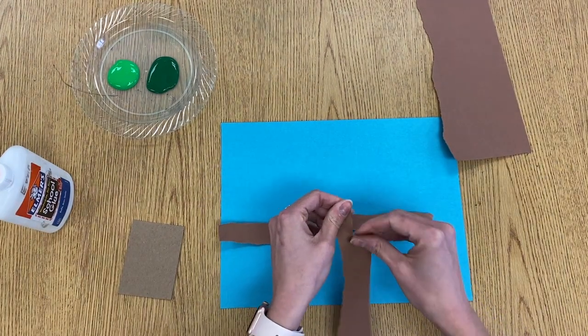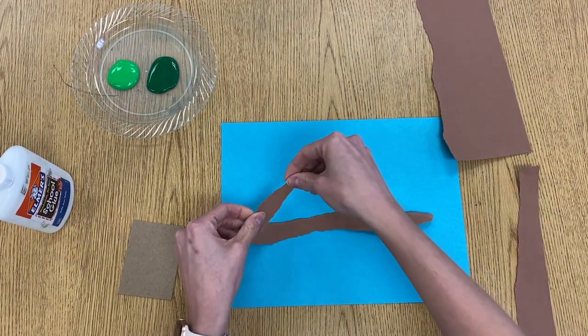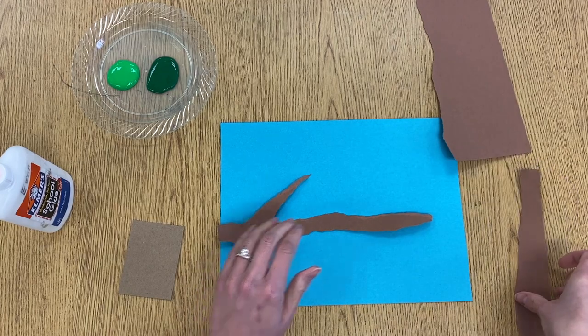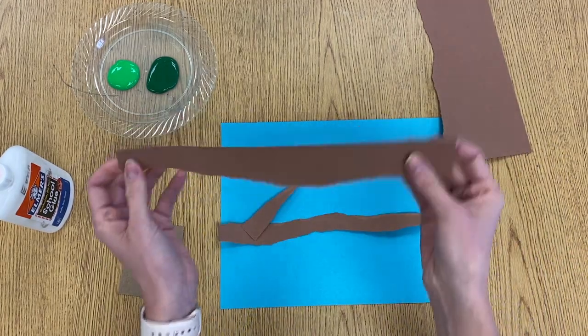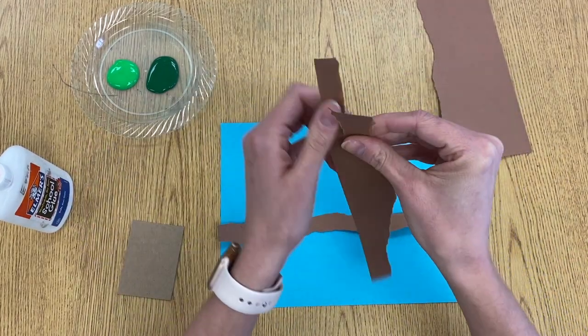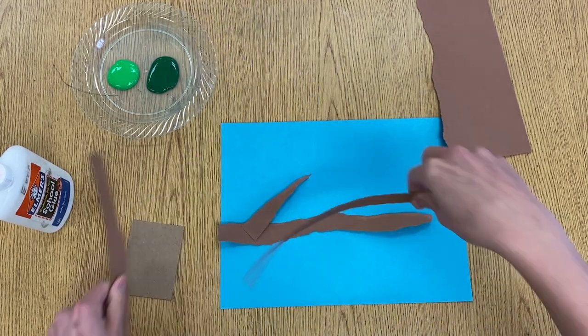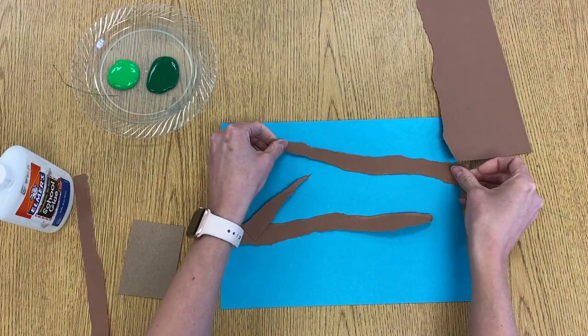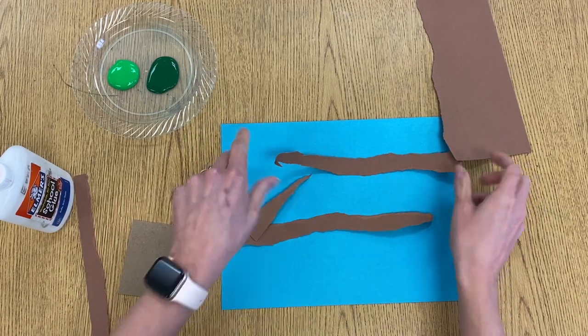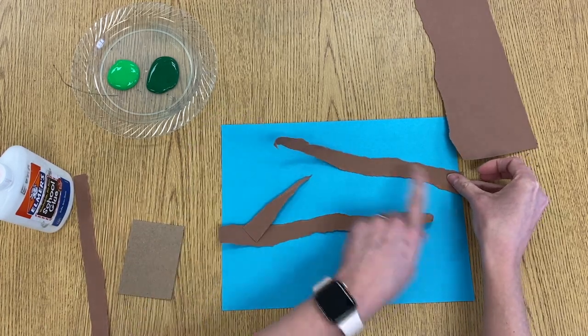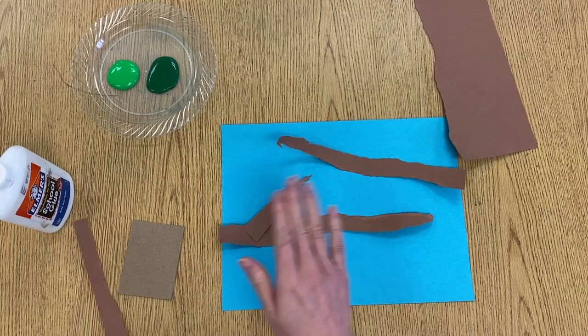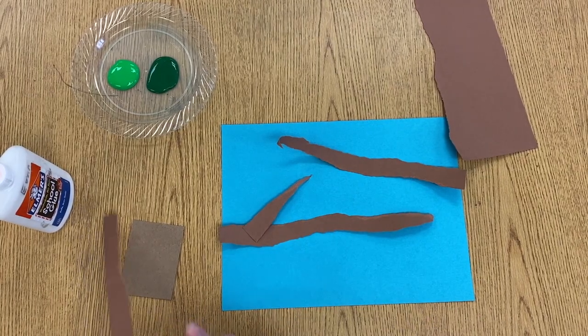So I'm going to continue tearing some branches, just kind of laying them out as I go. Just strips of paper. And I'm going to go kind of across my paper both ways, so I have an interesting pattern of branches laid out.